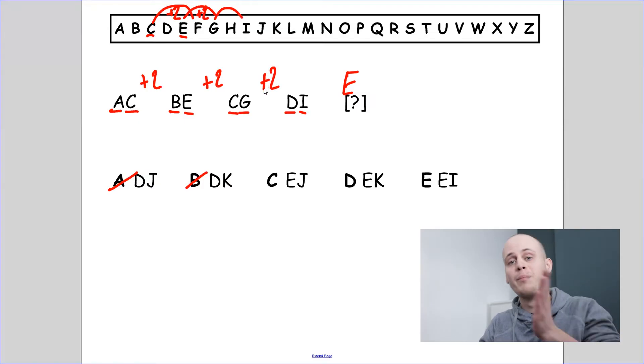I can safely assume that it's going to go up by another two for our final letter. So on my alphabet, one, two, I goes up two to K. My final answer is EK, which is D. And we're ready to move on.